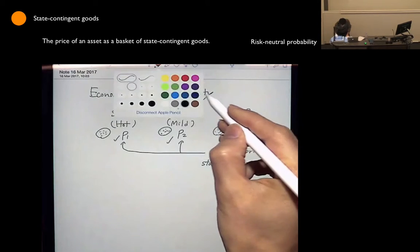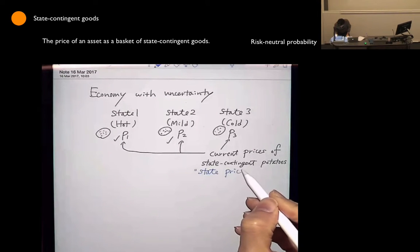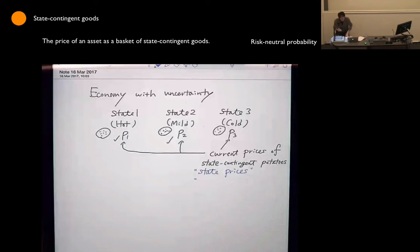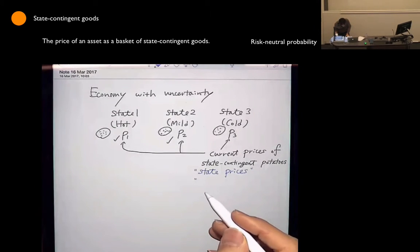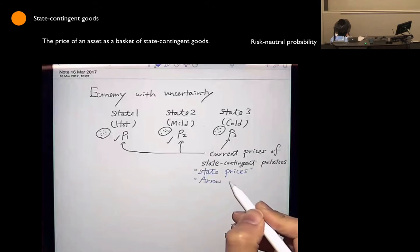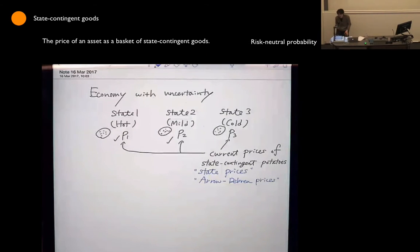So these prices are also called state prices. You pay P1 — if State 1 realizes, you get one unit of potato. You pay P3 today — if State 3 realizes, you get one unit of potato. These are called state prices, or they are also called Arrow-Debreu prices, named after two Nobel laureates: Kenneth Arrow and Gerhard Debreu.